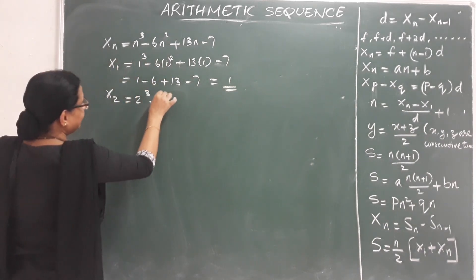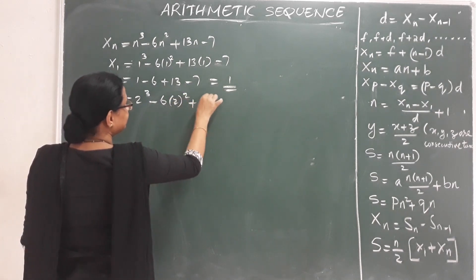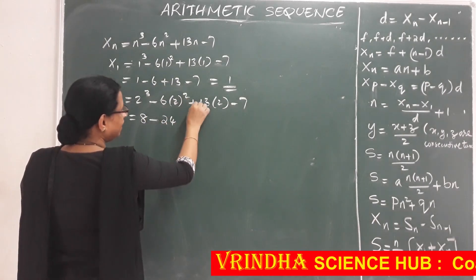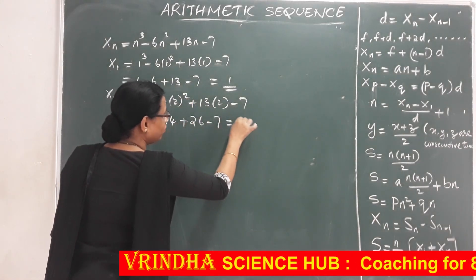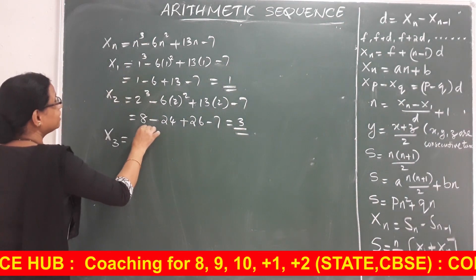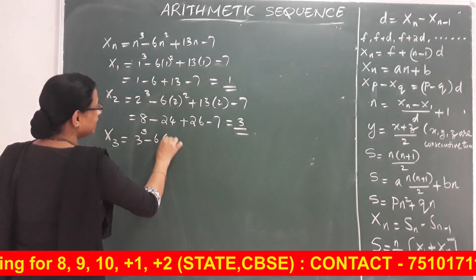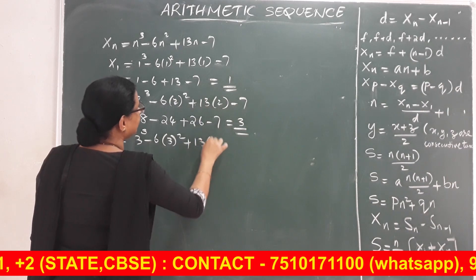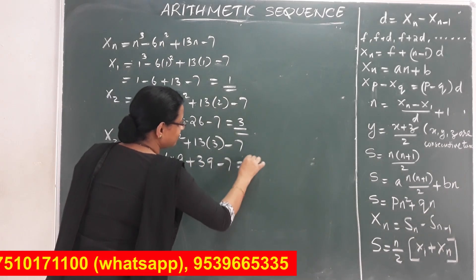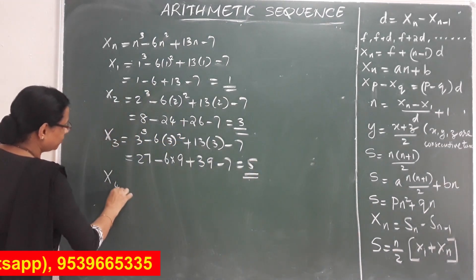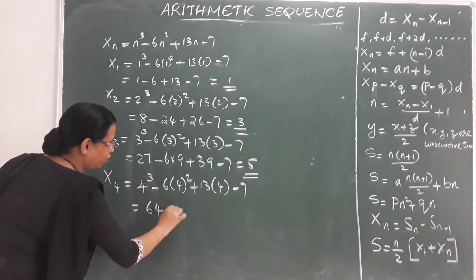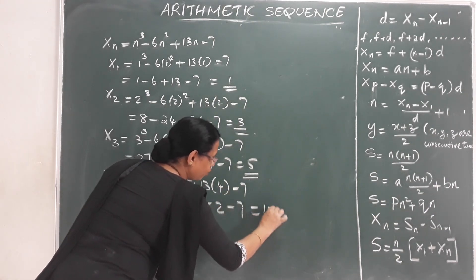x2 is equal to 2 cube minus 6 into 2 square plus 13 into 2 minus 7, which equals 3. Then x3 equals 3 cube minus 6 into 3 square plus 13 into 3 minus 7, which equals 5. And x4 equals 13.